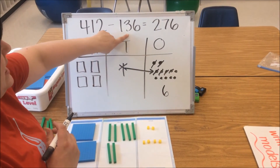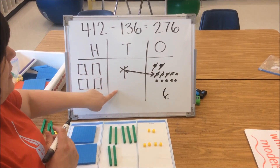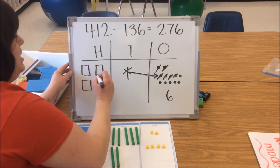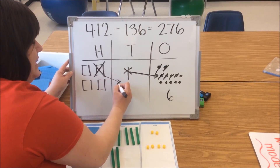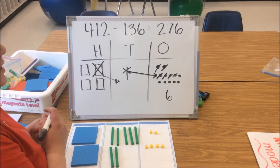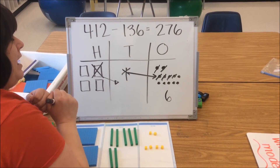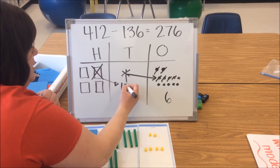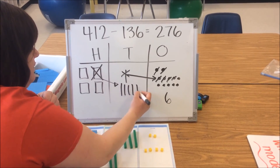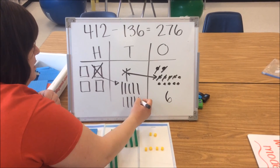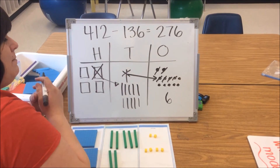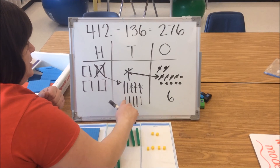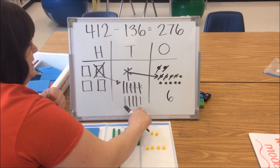We go back to our problem — we need to take away 3 tens. We don't have any tens here, so we're going to decompose 100 to get those tens. Just like we did with our tens to our ones place, we're going to draw our arrow and model those 10 tens that make up 100: 10, 20, 30, 40, 50, 60, 70, 80, 90, 100. Now I can take away my 3 tens: 1, 2, 3. And I count what's remaining: 1, 2, 3, 4, 5, 6, 7.